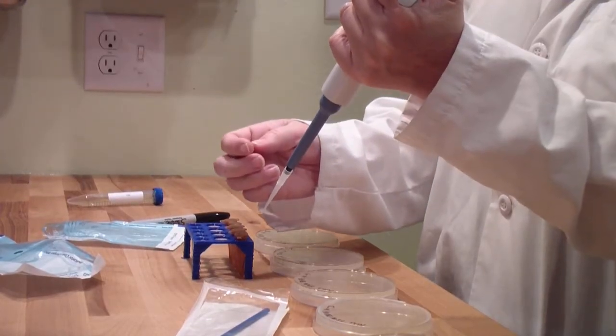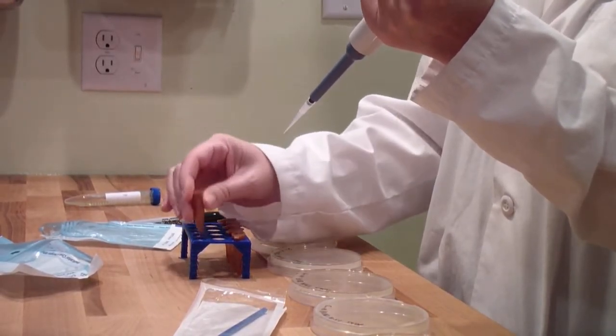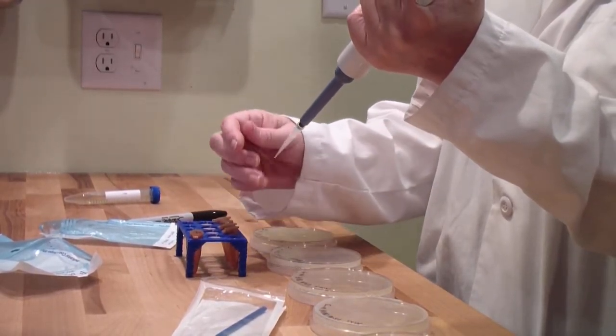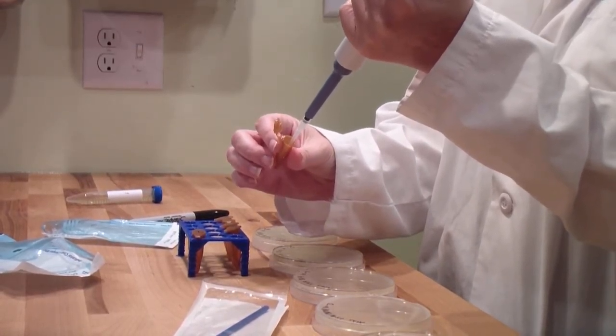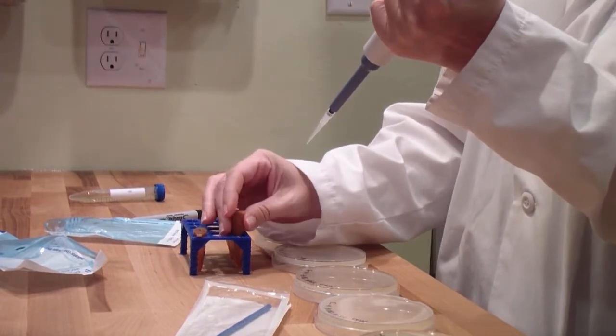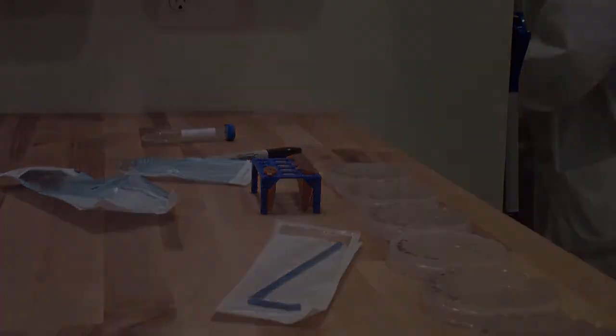Take ten microliters from the ten to the negative one tube and transfer it to the second tube labeled ten to the negative two. Mix with the pipette by moving the liquid up and down with the first stop until you have mixed five to eight times. Empty the tip by going to the second stop and discard the tip.